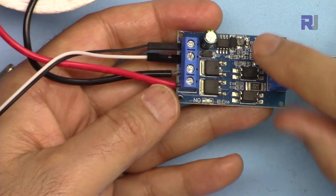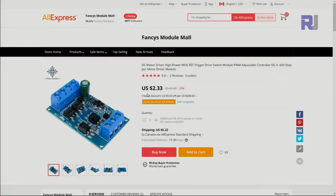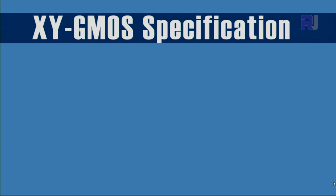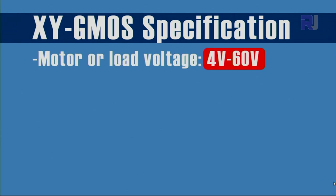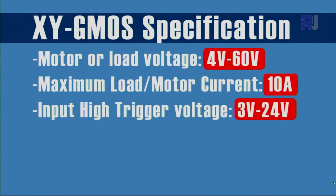This is sold on Aliexpress and eBay. Here this is a page where it shows $2.33 plus $6.22 shipping. Here's the specification for this module: the motor or load voltage can be between 4 to 60 volts and the maximum current that this module can handle is 10 ampere for load or motor.